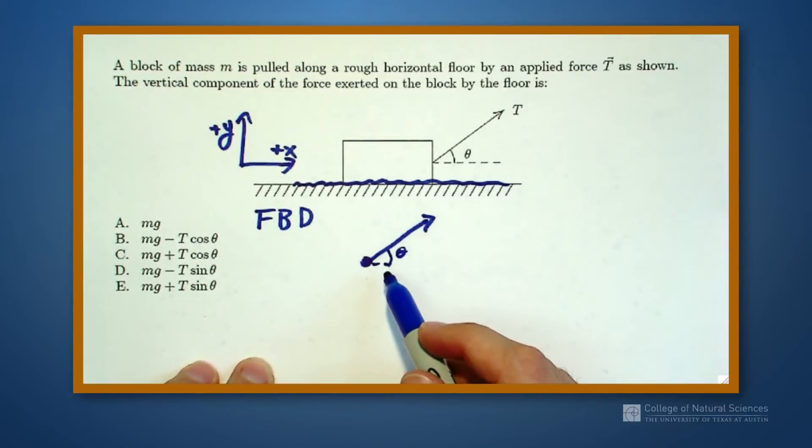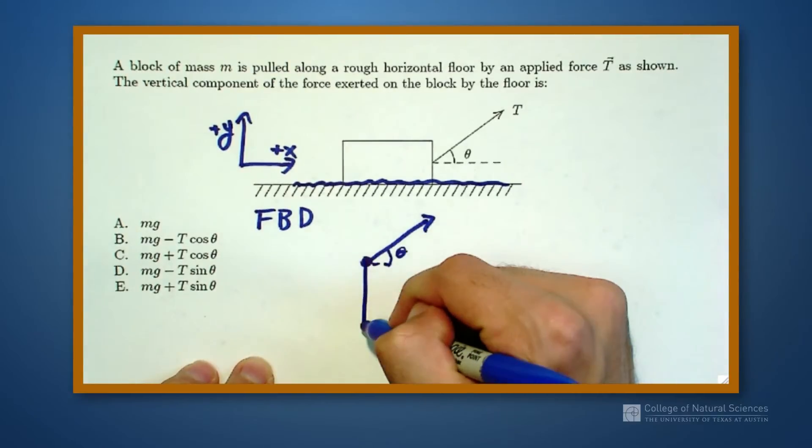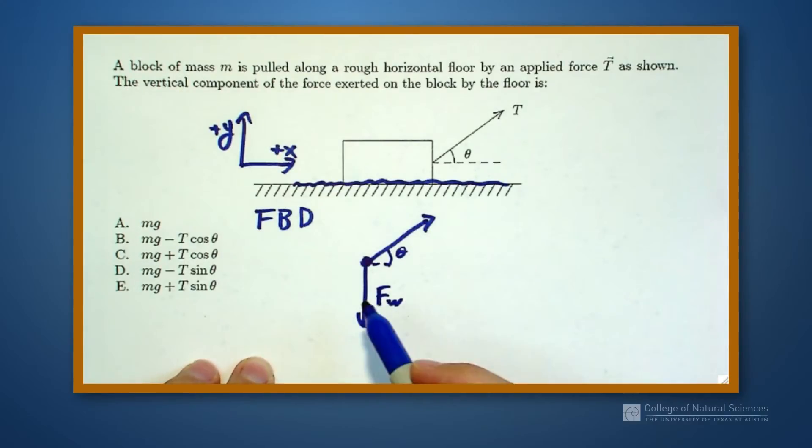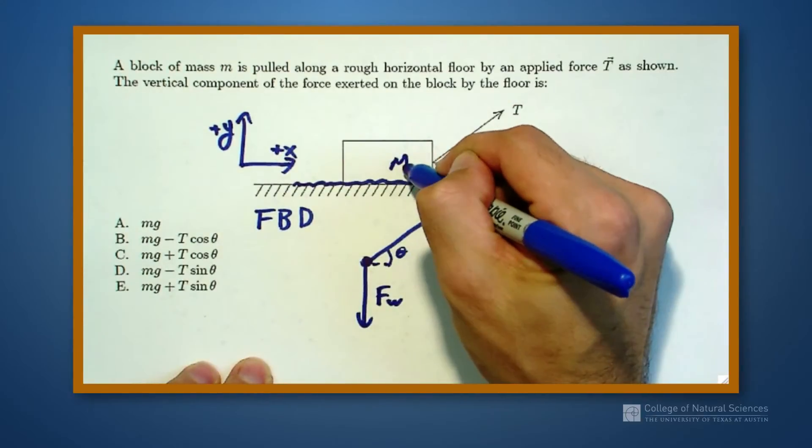We also have a downward force due to gravity, our weight force. The earth pulls this block down. This block has some mass M.